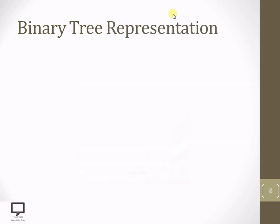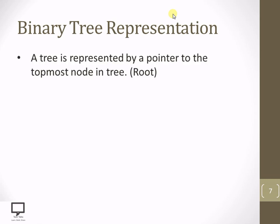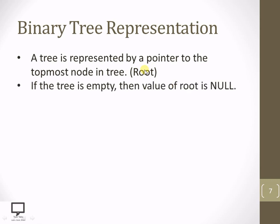Now let's move forward to the representation of a binary tree. First, you must know the root — the first element of your tree. Whenever you want to represent a tree, you maintain a pointer to the topmost node, called the root, and that pointer holds the value of the root node. If the tree is empty, then the root is null, and vice versa — if the root is null, the tree is empty.